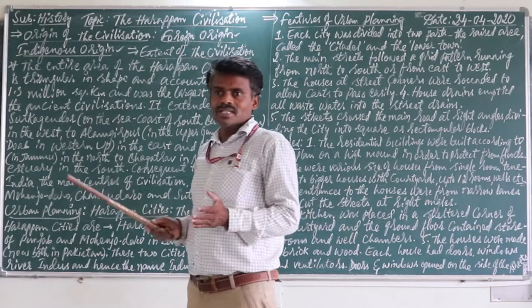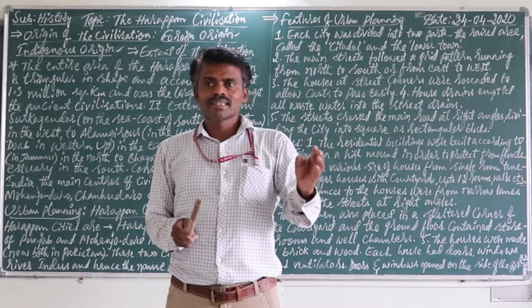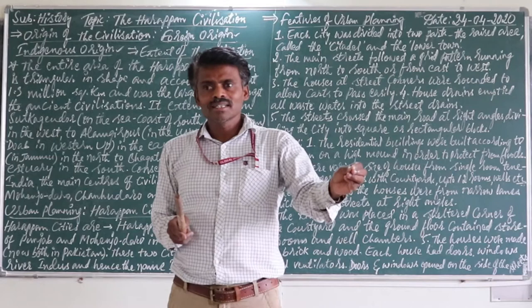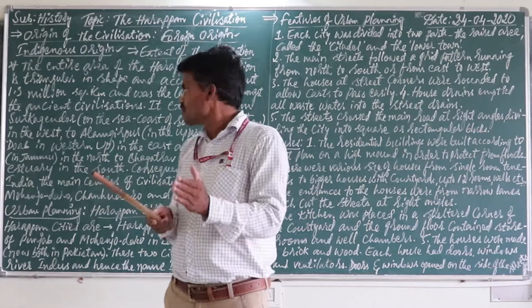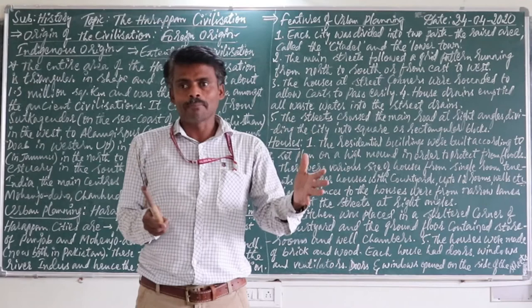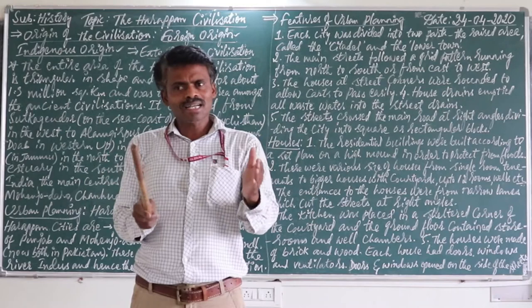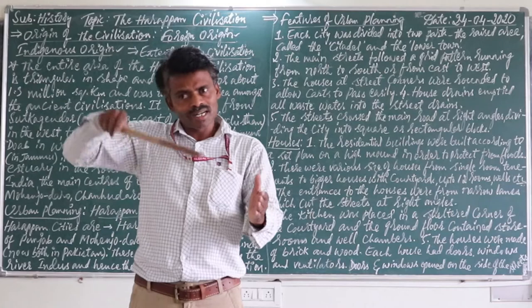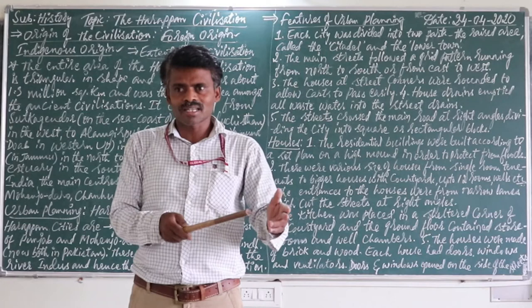I want to conclude: the civilization is neither purely foreign origin nor purely indigenous origin — it is both. The sites located in west Balochistan, some parts of Pakistan, extend into India, including Alamgirpur and Lothal in Gujarat. If you take a map, you will see the civilization spreading in a triangular shape, combining both foreign and Indian origin.